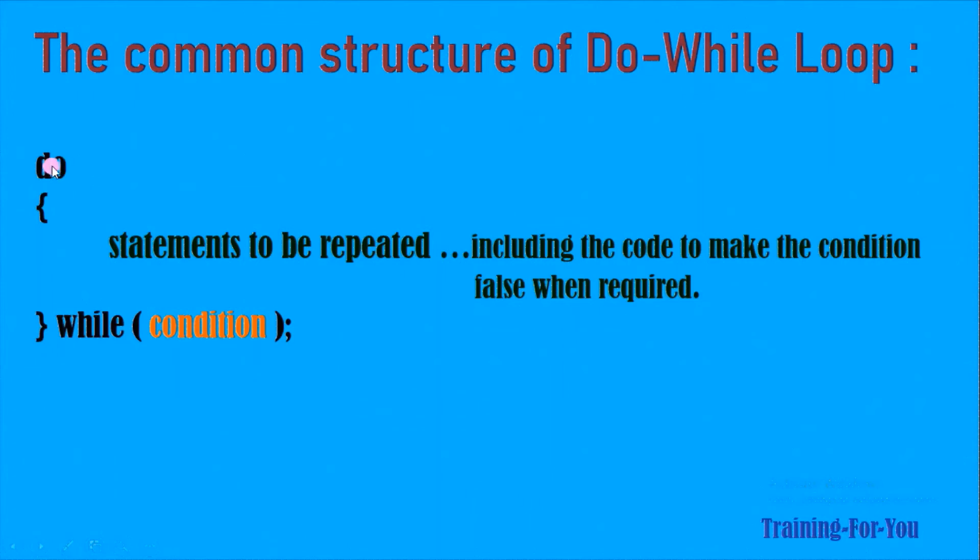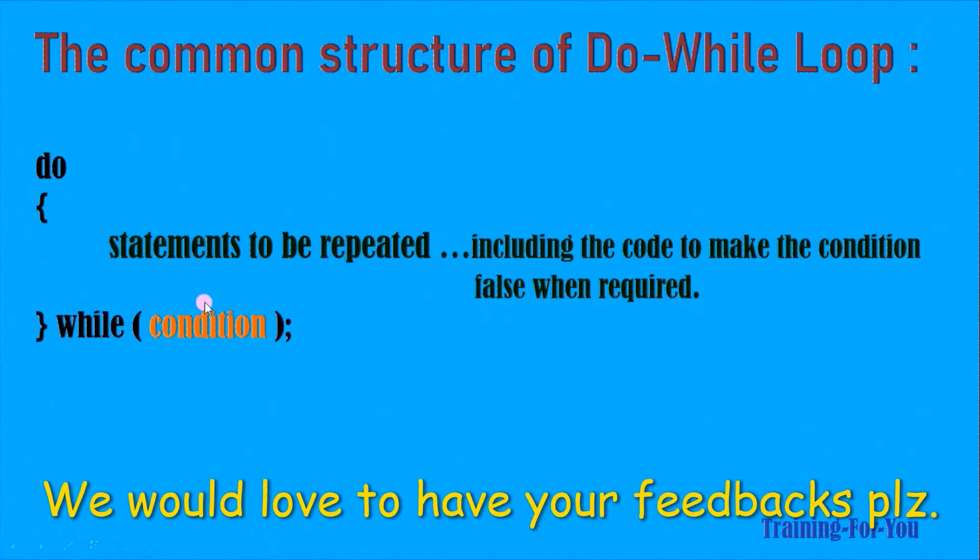So as there is no condition at the beginning, the control automatically enters into the loop. That's the secret of making it work at least once. So control enters into the loop body, executes it, and then at the end it checks the condition. If it is true, it goes back to the beginning and repeats the steps written inside the body. Again comes here, checks the condition.